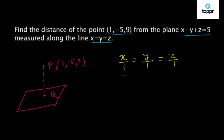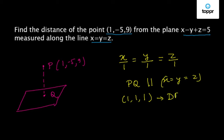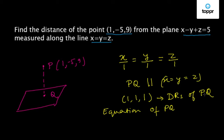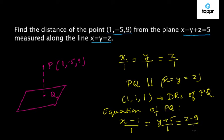Since the line PQ is parallel to the line x equal to y equal to z, it will have the same direction ratios, that is 1, 1, 1. These are the direction ratios of PQ. So let us now write the equation of the line PQ. The equation of PQ, as it passes through P with direction ratios 1, 1, 1, will be: x minus 1 by 1 equal to y plus 5 by 1 equal to z minus 9 by 1, and let us say this is equal to lambda.